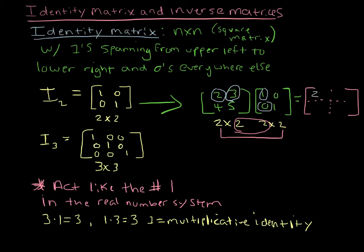And then 2 times 0 plus 3 times 1 gives me a 3. 4 times 1 plus 5 times 0 gives me a 4. And 4 times 0 plus 5 times 1 gives me a 5.